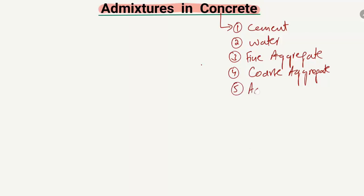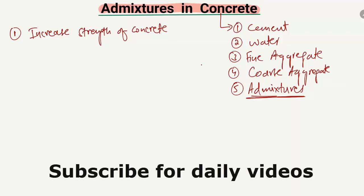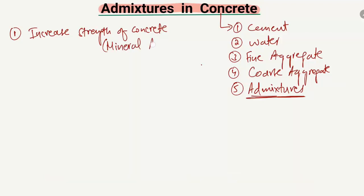We also sometimes use admixtures in concrete. The first advantage is that admixtures increase the strength of concrete. There are two types of admixtures: chemical admixtures and mineral admixtures. The property of increasing concrete strength is mostly related to the mineral type of admixtures.